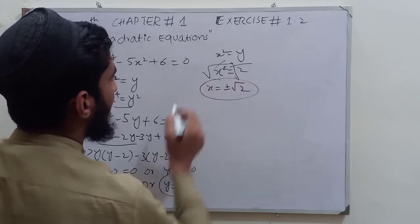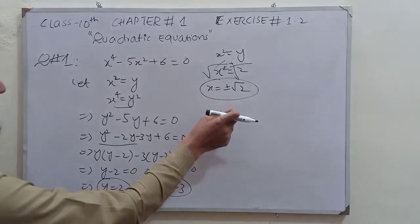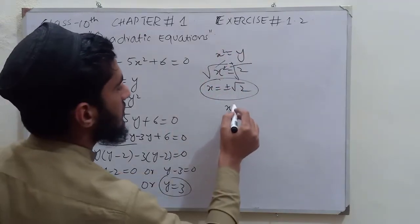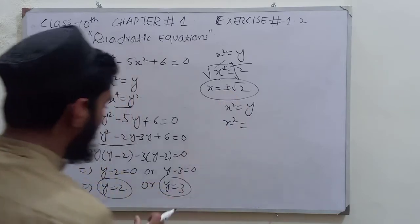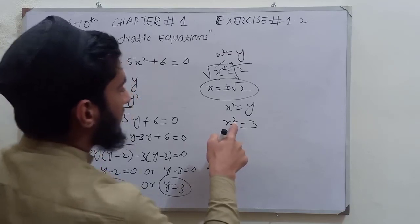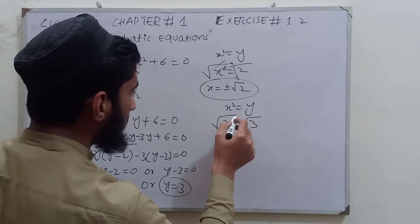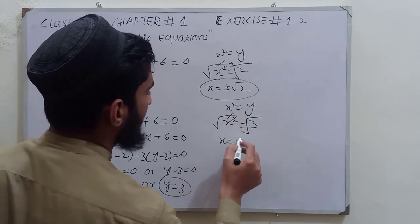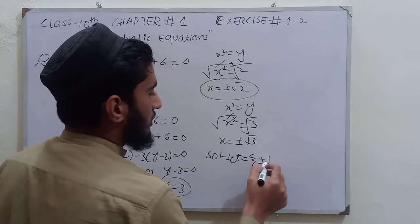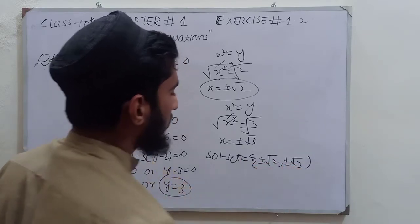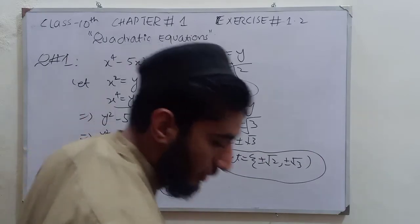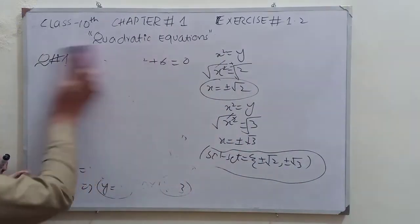Since the highest power is 4, there must be 4 solutions. Now putting y equals 3: x² equals 3, taking the square root of both sides gives x equals plus or minus root 3. So the solution set is {±√2, ±√3} — that is, plus root 2, minus root 2, plus root 3, minus root 3. This is the required solution of the given equation.